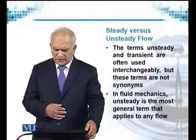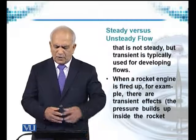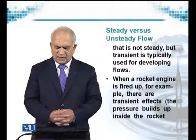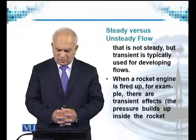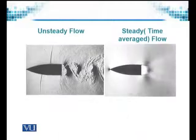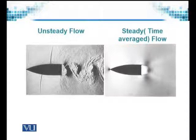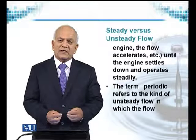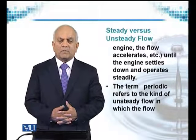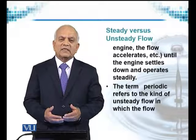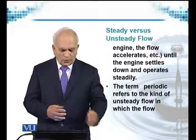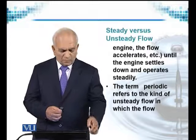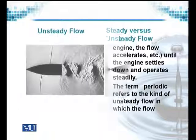In fluid mechanics, unsteady is the most general term that applies to any flow that is not steady. Transient is typically used for developing flows. When a rocket engine is fired up, for example, there are transient effects: the flow accelerates and builds up, and eventually, when it develops sufficient power, the rocket takes off and the engine settles down to steady operation. This is one example where transient flow takes place.